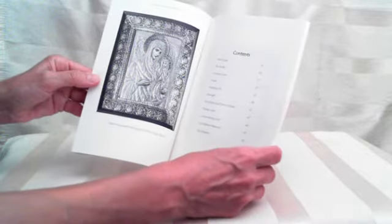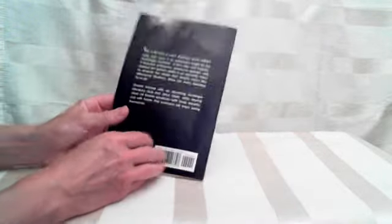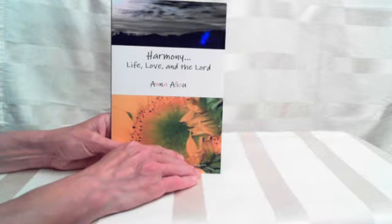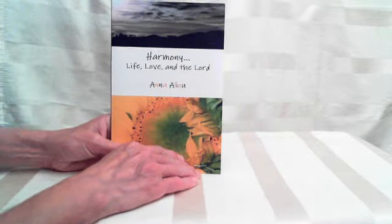And it gives you a little pinch about the author and the little religious stuff. So anyway, go to Enoch at Barnes and Noble, and for $1.99, you'll have yourself a very interesting book by Anna Aliu, Harmony, Life, Love, and the Lord. Thanks for stepping by.